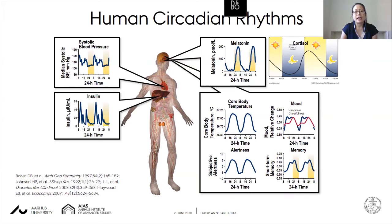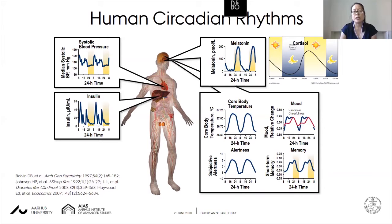Circadian rhythms are linked with the suprachiasmatic nucleus, a part of the brain considered our master clock and central circadian pacemaker. They prepare the body for restful sleep at some times and active wakefulness at others. We see numerous rhythms: melatonin tends to increase at night and is suppressed in the morning; cortisol does the opposite, increasing in the morning to prepare the body for activity and decreasing by night. We also see rhythms in mood and memory function.